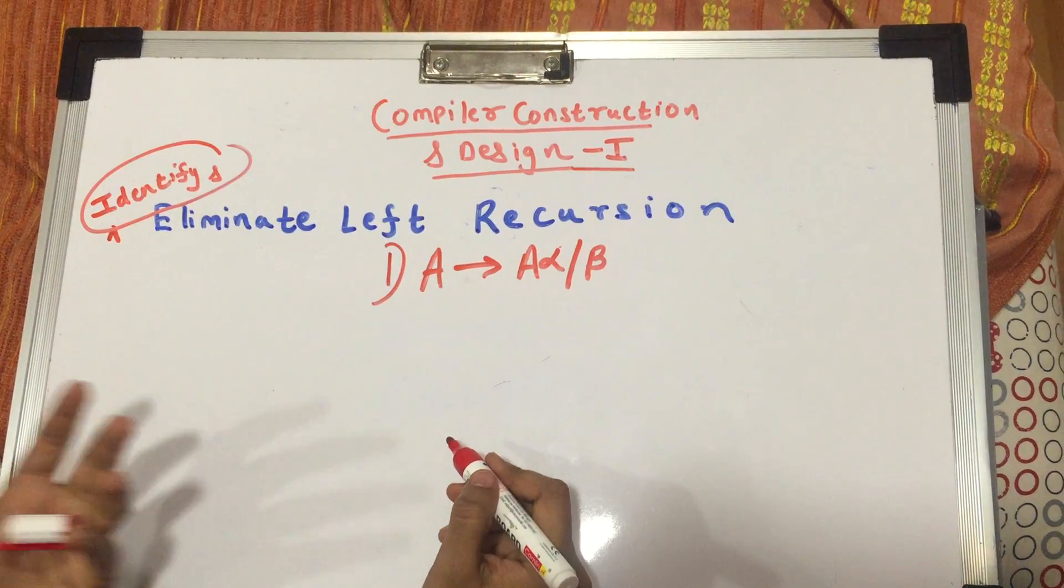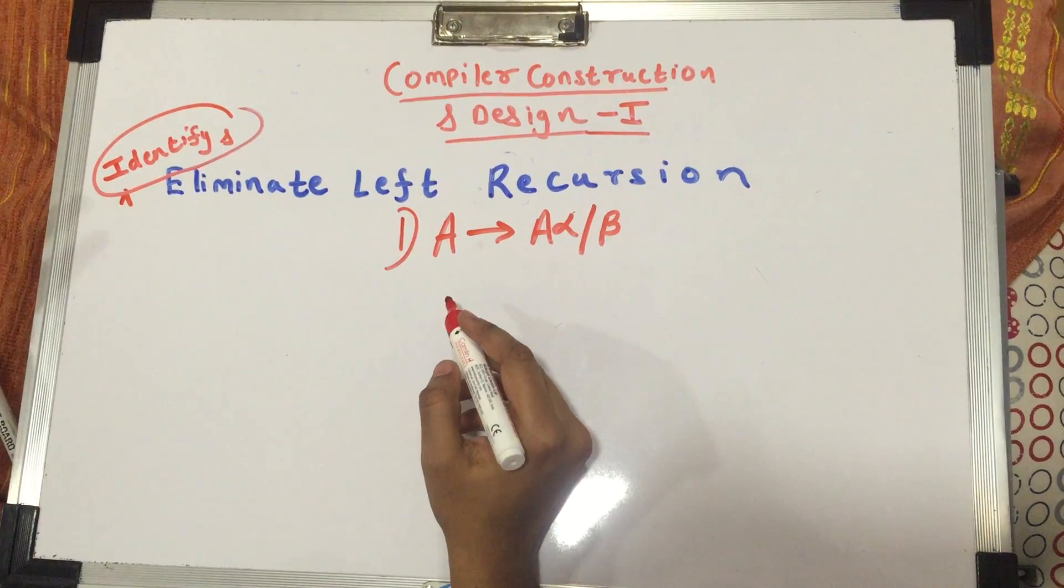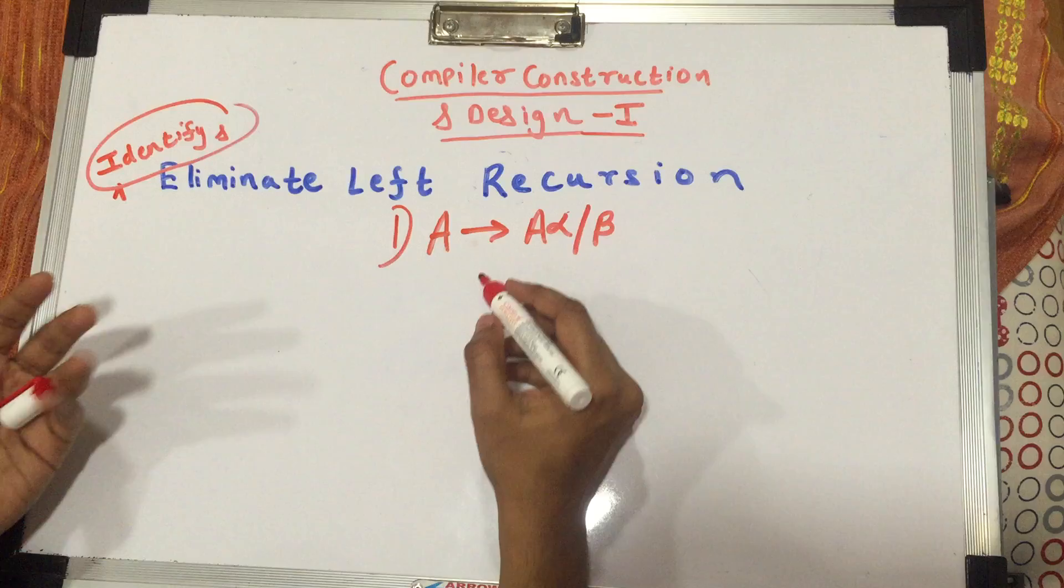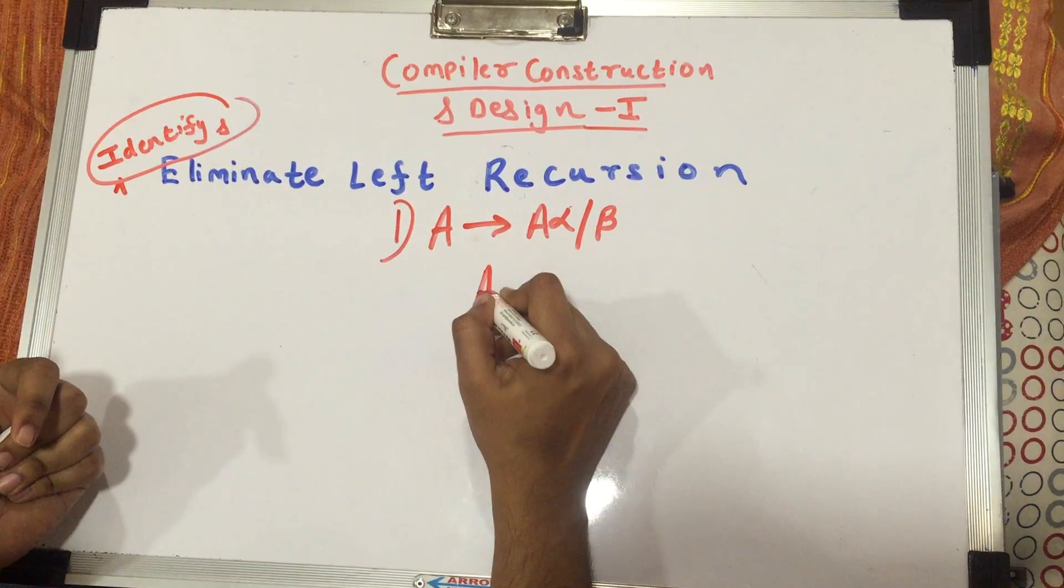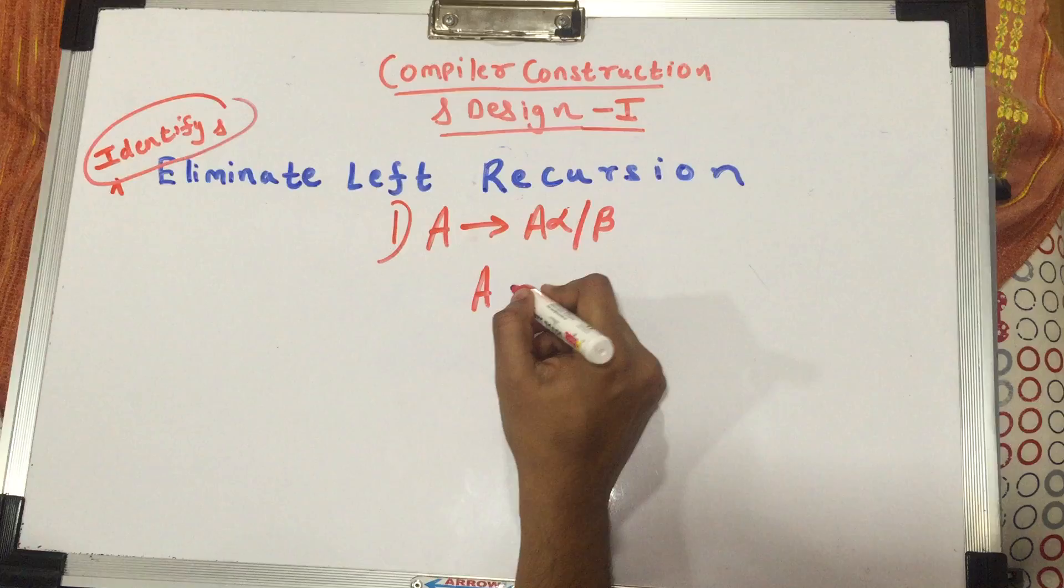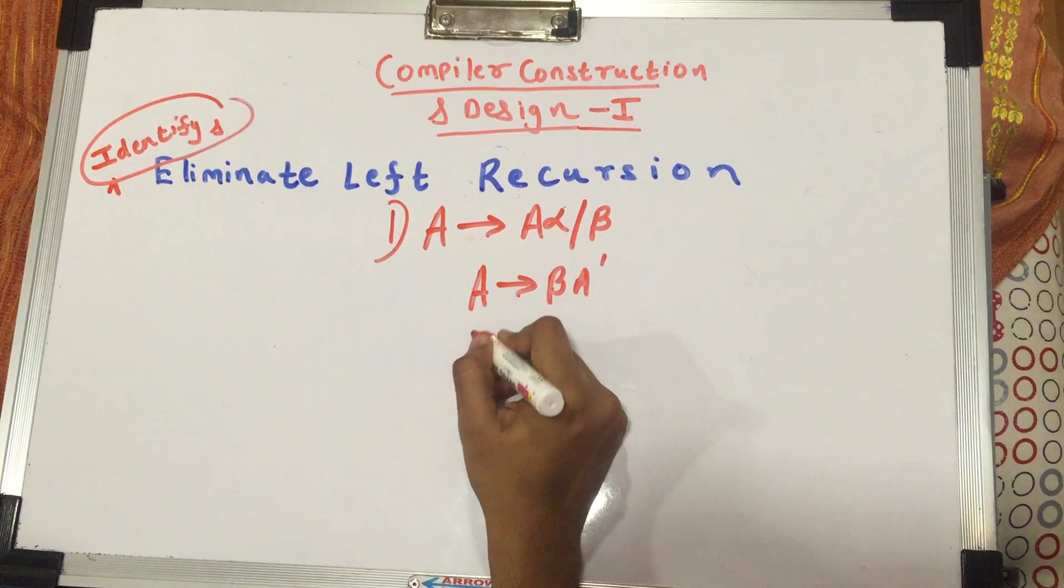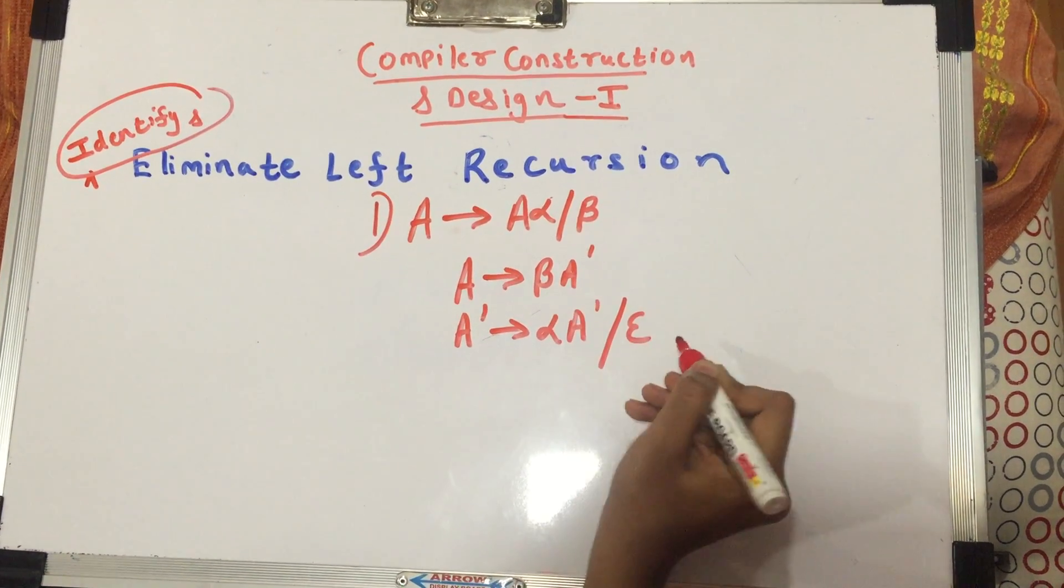Now to eliminate it, we have a few steps which we have to perform. The steps wouldn't be clear to you just on paper. As we solve more and more examples, they'll get clearer and clearer to you. So to eliminate it, you write A gives you beta A dash and A dash gives you alpha A dash slash epsilon.